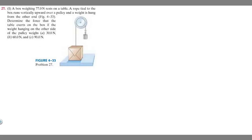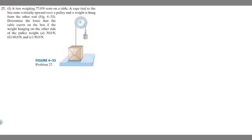Whenever I do these problems, the first thing you should do is draw a free body diagram. A free body diagram is where you label the different forces acting on your object. In this case, we're talking about this box on the table, and we want to label all the forces acting on the box.